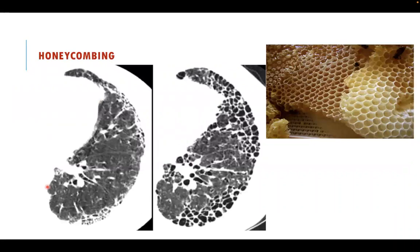The first and most important sign of UIP is honeycombing. Honeycombing is defined as single or multiple layers of contiguous thick-walled cysts stacked along the pleural surface. When you see multiple layers of thick-walled cysts stacked directly along the pleural surface — including more tiny thick-walled cysts stacked along the pleural surface — this is honeycombing, and you are dealing with a typical UIP pattern.